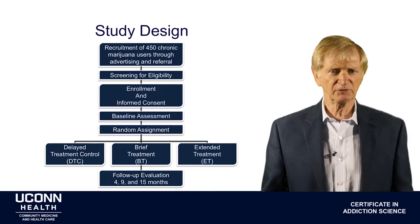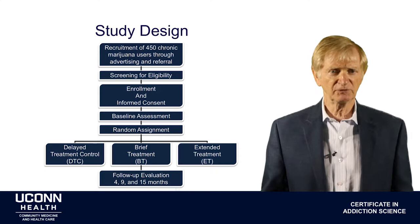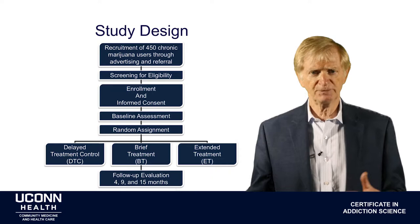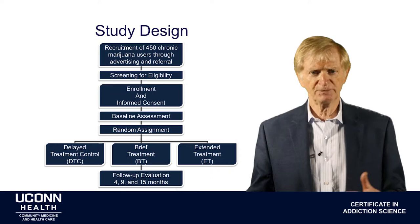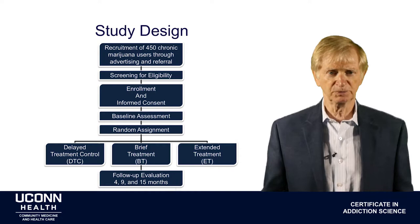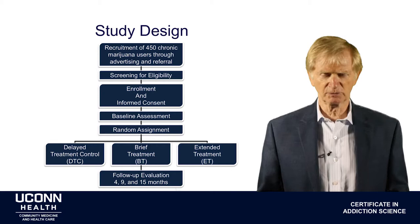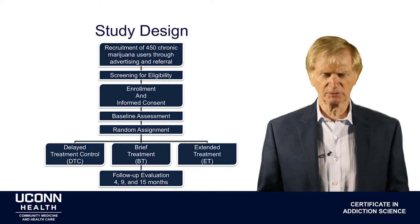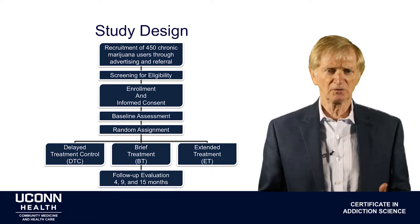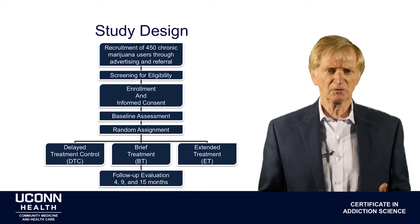Once participants met the eligibility criteria, they were enrolled and given informed consent. They had to be told they were participating in a trial and whether they would receive one treatment or another, or be randomized to a waitlist control group. They were also told that if they needed help while on a waitlist, that help would certainly be offered. Once they agreed to be randomized, they were assigned to one of three conditions. A baseline assessment then took a couple of hours, covering treatment history, drug use history, demographics, personality factors, and other variables relevant to measuring treatment response.